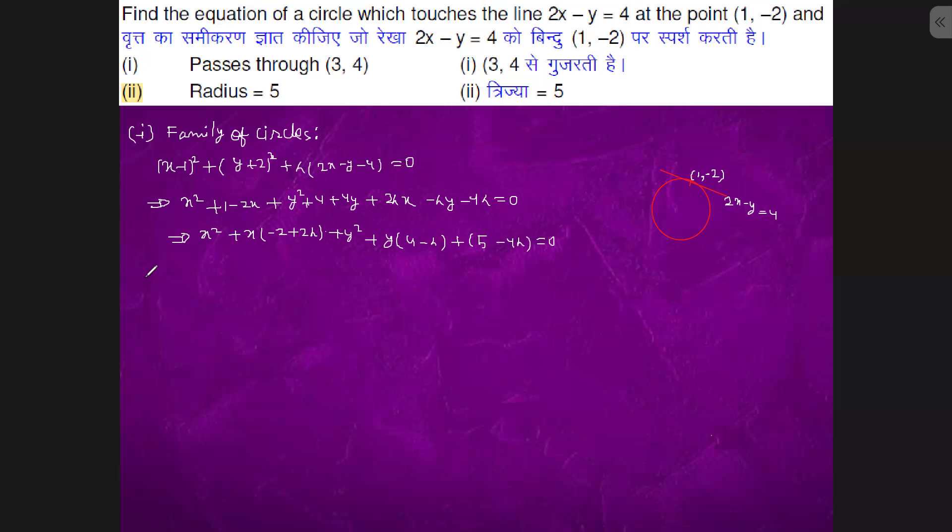So we will play with this equation. When it passes through (3, 4), the point should satisfy this equation. It is 9 plus 3(-2)